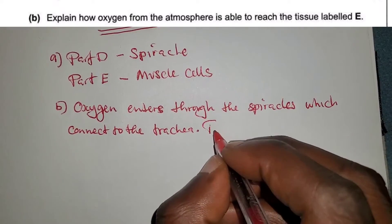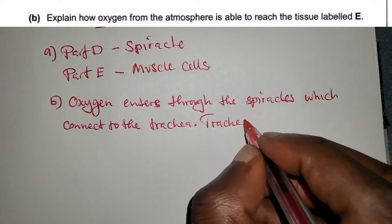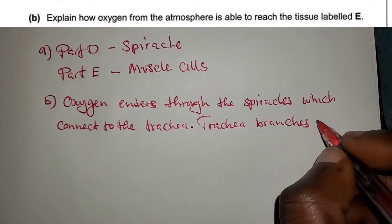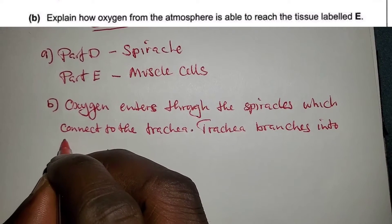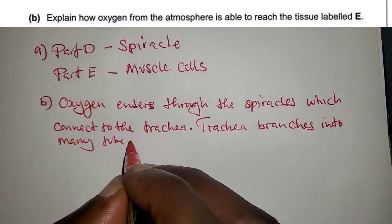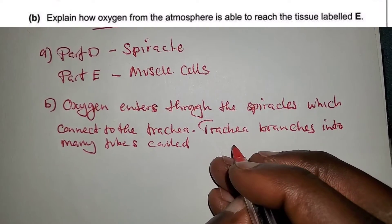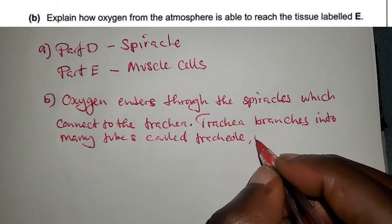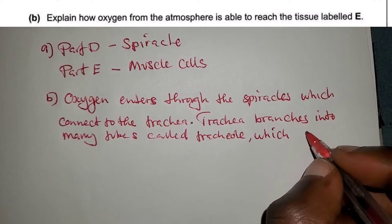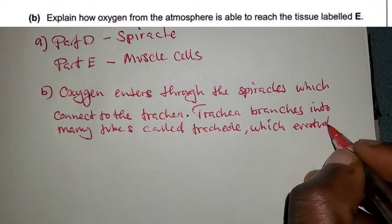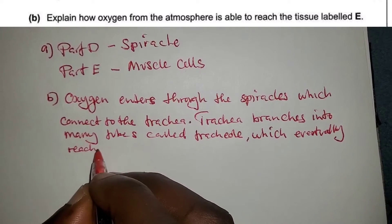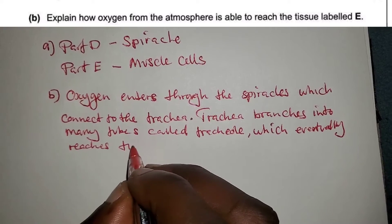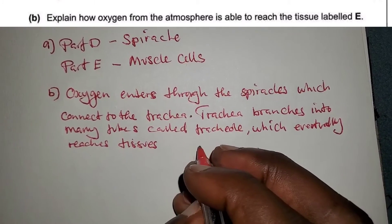The trachea branches into many smaller tubes called tracheoles. These tracheoles eventually reach the tissue cells.